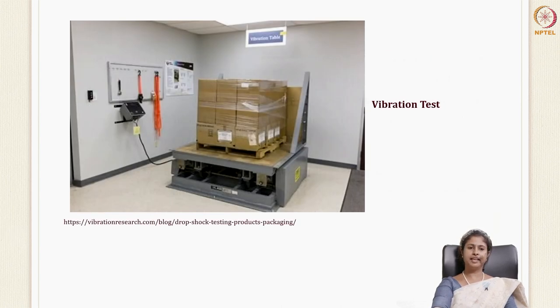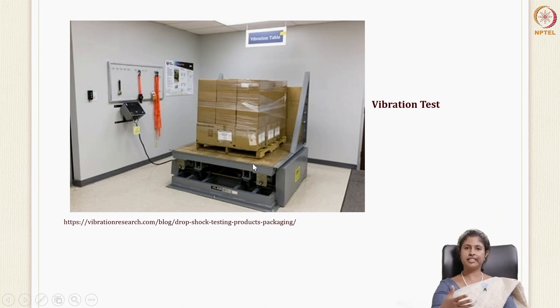This test helps study possible package failure or content damage and helps determine any weakness — such as loosening of closures or loss of resilience in the cushioning material. Anything that can happen through transit because of vibration can be determined in the laboratory before it actually happens. The frequency and amplitude of the vibrating table can both be varied.